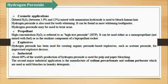Then as explosive — explosives banane ke liye use kiya jaata hai. Hydrogen peroxide se hum acetone peroxide banate hain, which is used as explosive. Then industrially isko yuz kiya jaata hai — paper aur pulp ki bleaching ke liye, aur industrial production of sodium percarbonate aur sodium perborate ke liye use kiya jaata hai.